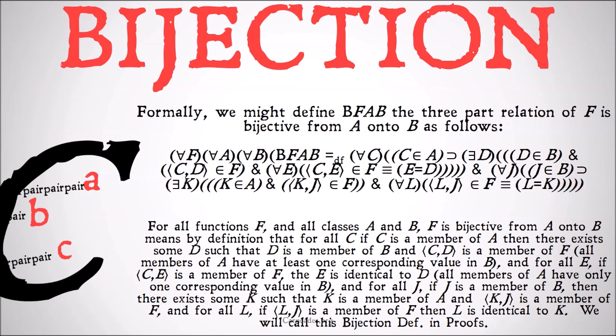Formally, we might define the three-part relation 'f is bijective from a onto b' as follows. For all functions f and all classes a and b, f is bijective from a onto b means, by definition: for all c, if c is a member of a, then there exists some d such that d is a member of b and the ordered pair (c, d) is a member of f — meaning all members of a have at least one corresponding value in b — and for all e, if (c, e) is a member of f, then e is identical to d.